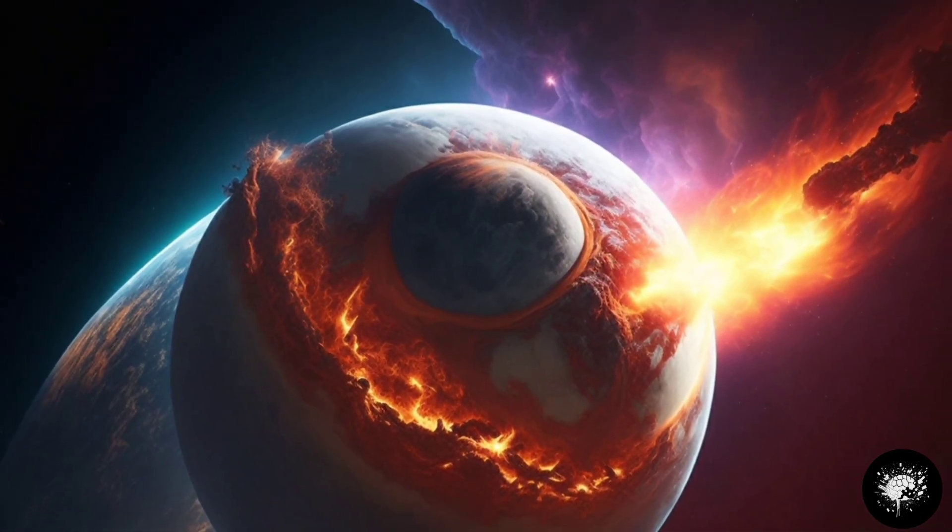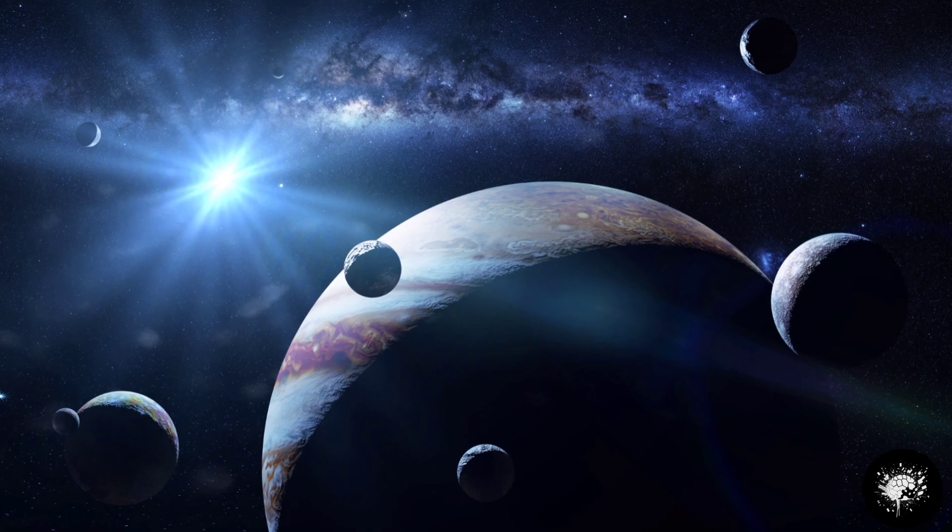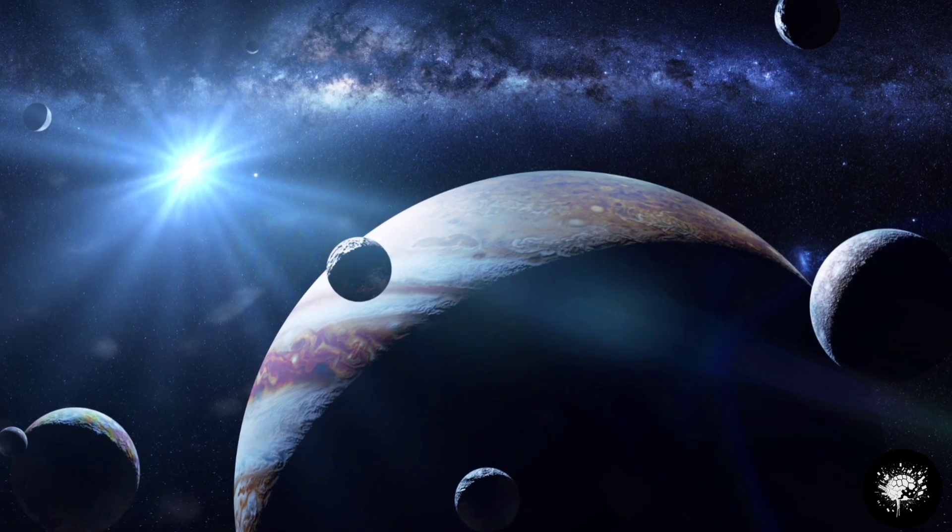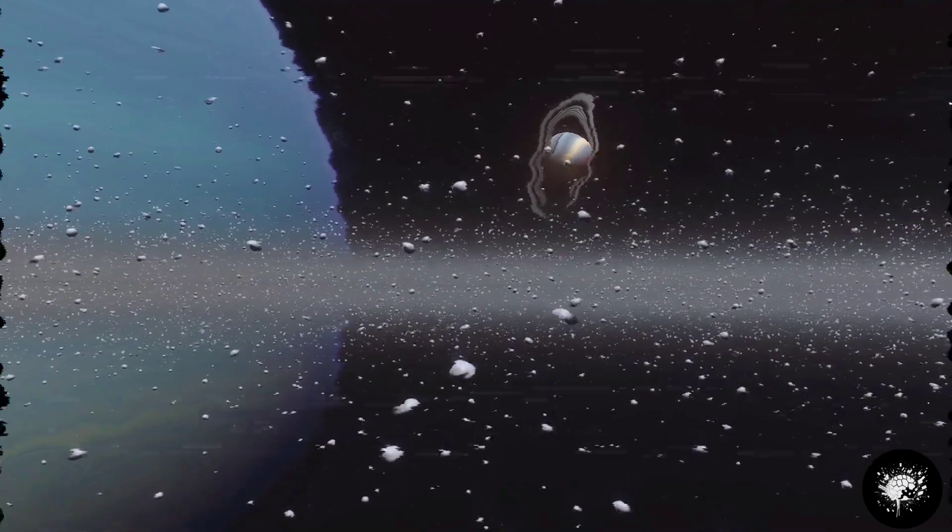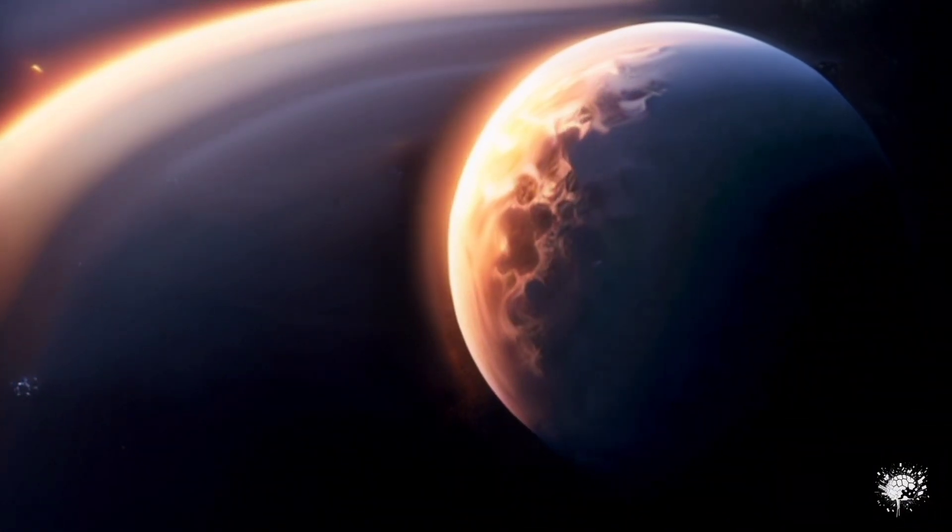However, before discussing the moment of collision, it's essential to mention that Jupiter has 79 moons orbiting around it. The chances of colliding with these moons are high, but let's imagine that we could somehow avoid them.